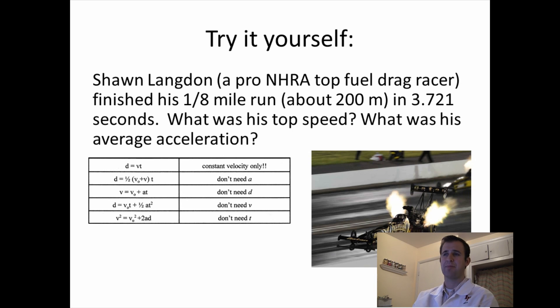Let's try an example, or have you try an example all by yourself, and I'll show you the answers at the end. Sean Langdon, he's a pro NHRA top fuel drag racer. He actually just finished a race and won the competition by finishing his race in 3.721 seconds. They're racing an eighth of a mile, which is about 200 meters. So let me ask you these two questions: What was his top speed, and what was his average acceleration? And when I say top speed, I really mean his final velocity. To solve this, there's actually two problems in one. Just break it down, solve for his top velocity, his ending velocity, and then go back, look at what you know again, and then solve for his average acceleration. I'll give you five seconds to solve it on your own, which I know you'll need more than five seconds, so pause the video, solve the problem, and then in five seconds, I'll show you the answers.